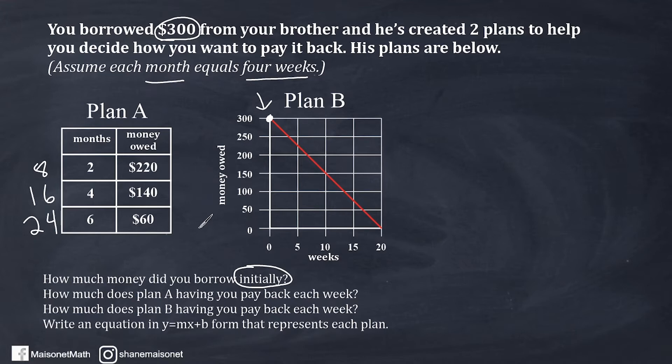Now what we should also remember is it says straight up in the problem how much you borrowed from your brother. It says right here, $300. So that matches up with what this graph says. Now let's move on to the next question, which asks how much money does Plan A have you pay back each week? Whenever you are being asked a question that has to do with each week or per week or per something else, that indicates a rate. And when you read language that deals with rates, we should think about ratios, which is a comparison of the amount of one unit to another unit. And in terms of linear equations, a rate really is the slope of the situation. Now remember, slope is the change in Y values over the change in X values.